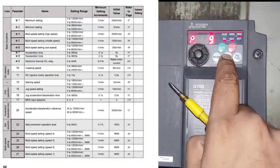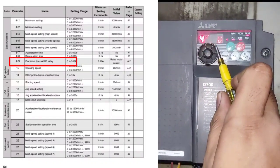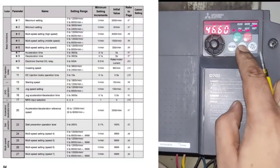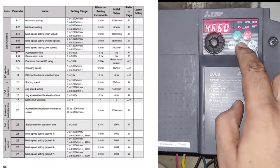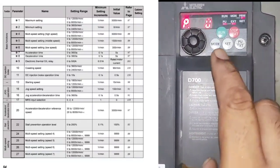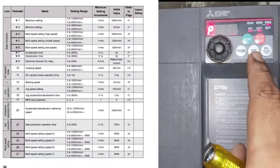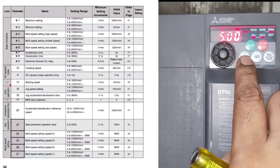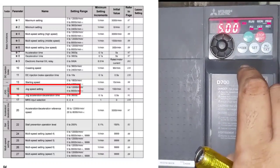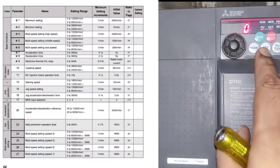Next parameter is P9, which is overload setting or electronic thermal overload relay — set the overload ampere value of your motor here. Next is P15, which is for jog frequency. We set 5 Hz for jog frequency. When you inch your drive, 5 Hz is set for jog application.